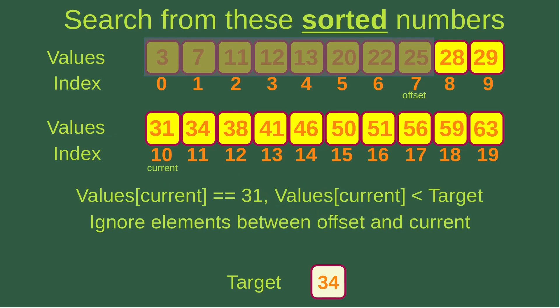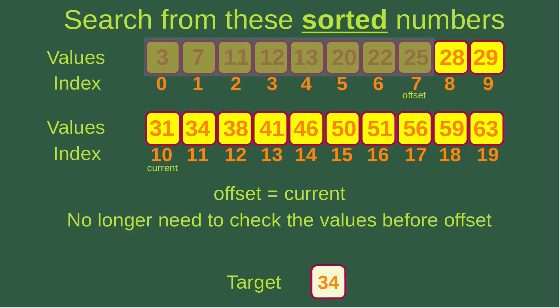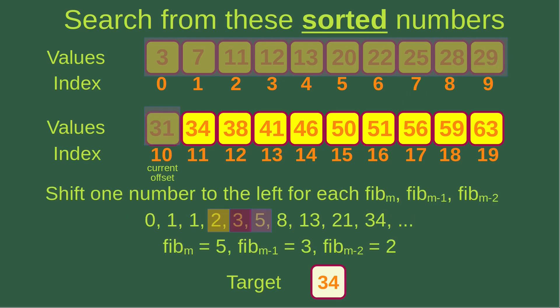Since the value at the current index is smaller than the target, I ignore the elements between offset and current, shading them in gray. I make the offset equal to the current, so the offset becomes 10 and the current index remains 10. I no longer need to check values before the offset index.